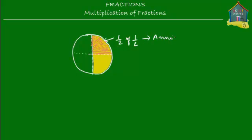So Annie had this red slice over here. Now if you look at this red slice, how much of this entire pizza is this red slice? If you look carefully, you'll see that this pizza is actually cut into four pieces.